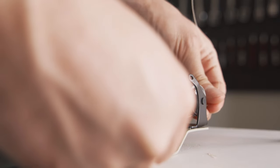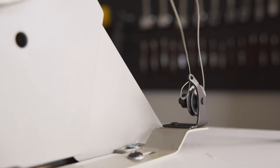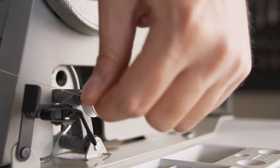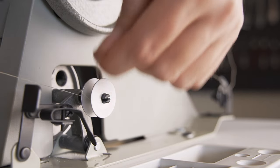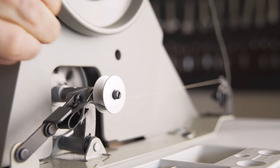To use the bobbin winder, run thread through the tensioner disks, then up through the guide. Pull it through the center slot on the winder and attach your bobbin. Wind the thread around the bobbin a few times, then press the bar forward to engage the winder. Apply pressure to the pedal to begin winding.